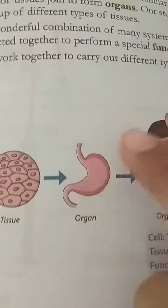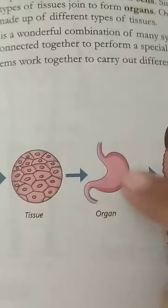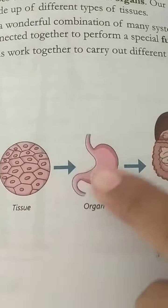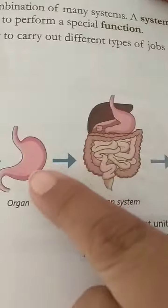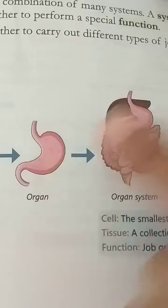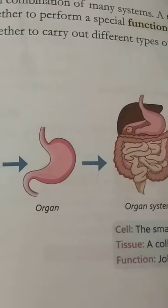Now, this organ — many organs combine and make an organ system. Like this is a stomach, and then liver, pancreas.